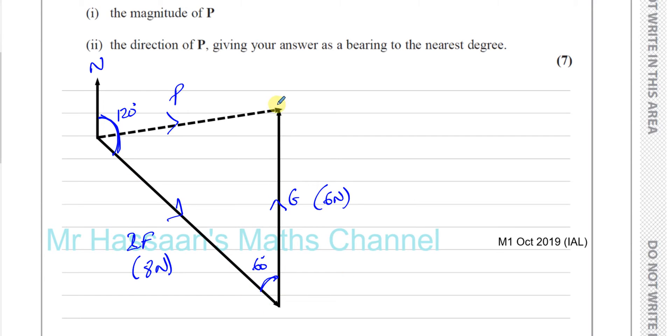Now, looking at this triangle here, I can find the magnitude of P, okay, with that force P, by basically using the cosine rule. Because I have two sides and the angle between them, I've got to find the side opposite of that. So, we've got to use the cosine rule here.